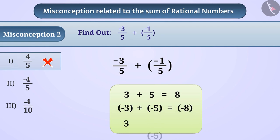Here both are negative rational numbers, so the sum will be negative. Therefore, the sum minus 4 by 5 will be obtained here. That is, option 2 is the correct answer.